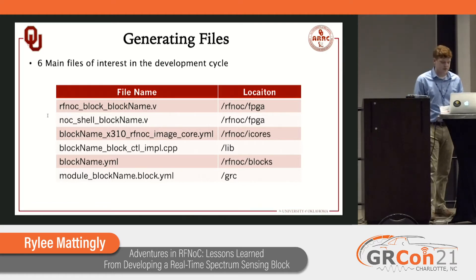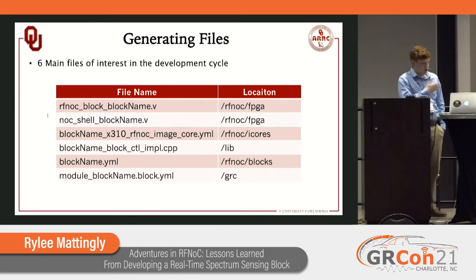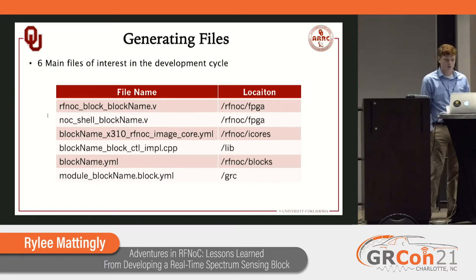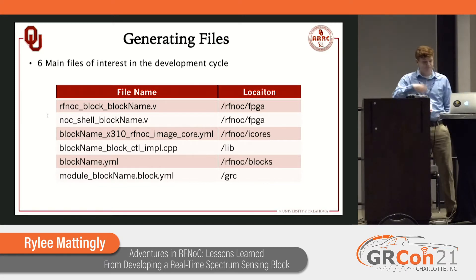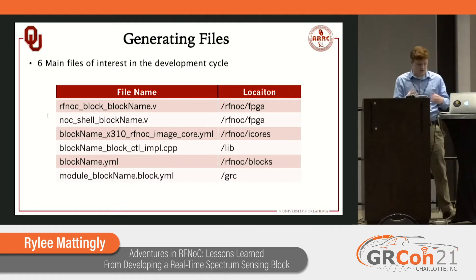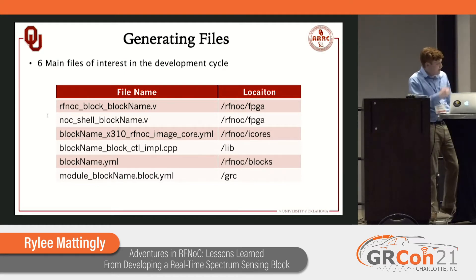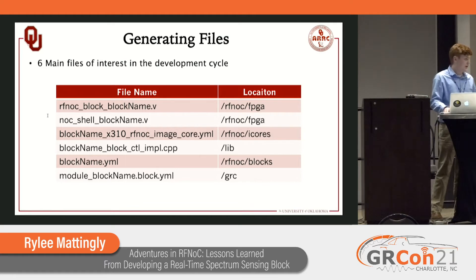There are six main files that we had to work with for a block with some complexity. We have two Verilog files: the noc_shell_blockname.v file, which is where our interface comes from, and the rfnoc_block_blockname.v file, where our module is instantiated. Then we have image_core.yaml for instantiating all blocks needed in our image and synthesizing to the X310, the implementation.cpp file for adding registers and ports on the software side, the blockname.yaml describing the block, and the block.yaml used by GNU Radio to show what the block looks like in the GUI.